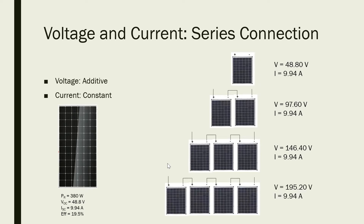And suppose we have four of these solar panels connected in series. This will give us an output voltage of 195.20 volts — that is 48.8 volts times 4 — and a current of 9.94 amperes.